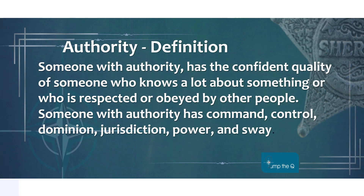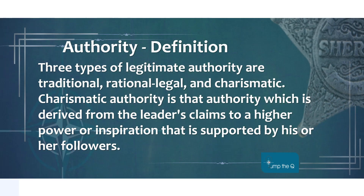Let's quickly define authority. Someone with authority has a confident quality — they know a lot about something and are respected or obeyed by other people. Someone with authority has command, control, dominion, jurisdiction, power and sway. There are three types of legitimate authority: traditional, rational-legal, and charismatic. We're really talking about charismatic leadership here — authority derived from a leader's claim to a higher power or inspiration that is supported by their followers.